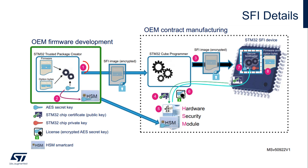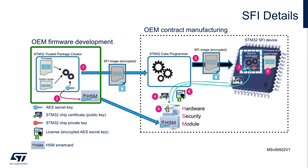In step 1, the OEM creates an AES secret key and is responsible for keeping it secret, and uses STM32 Trusted Package Creator to create the encrypted SFI image that includes the original firmware and the optional configuration of the device after the SFI process. In step 2, the OEM programs the STM32 HSM with the AES secret key used in step 1 for encrypting the SFI image, and initializes it with a counter that will limit the number of STM32 devices that can be programmed with this card.